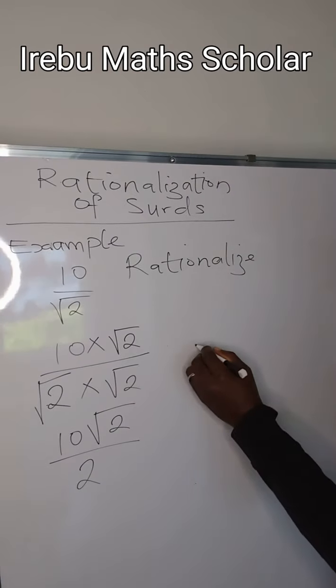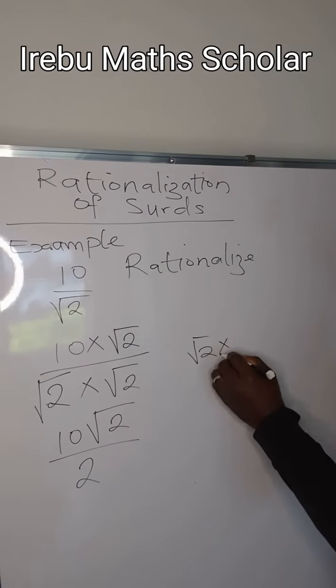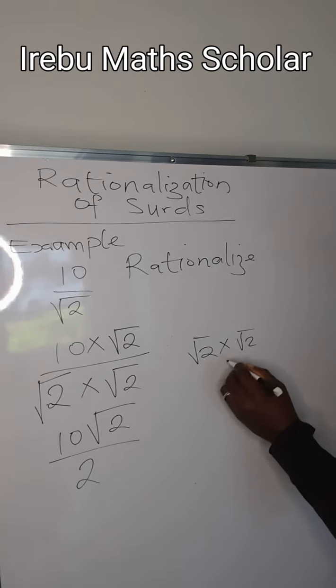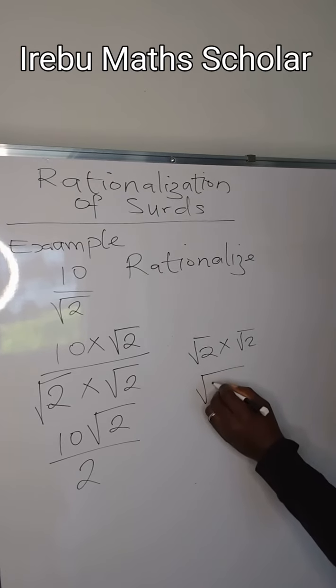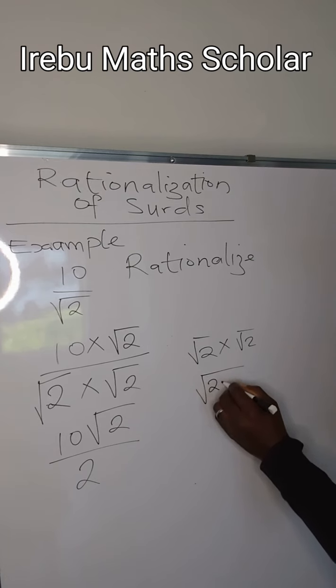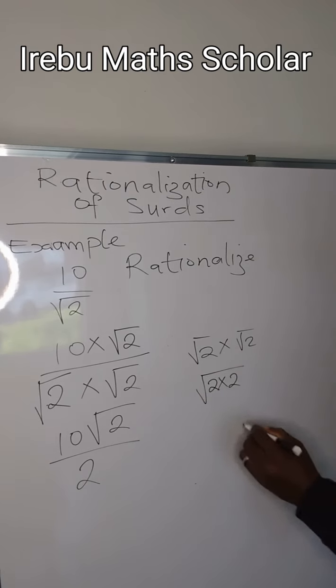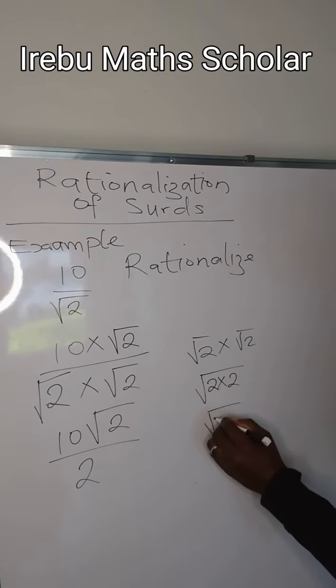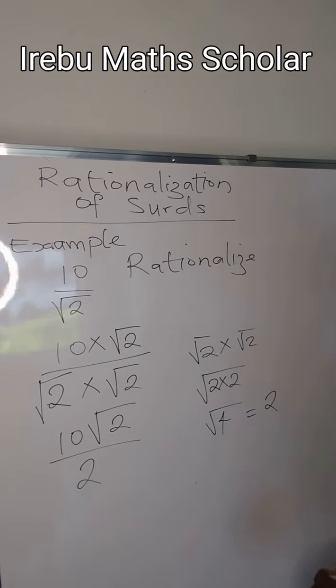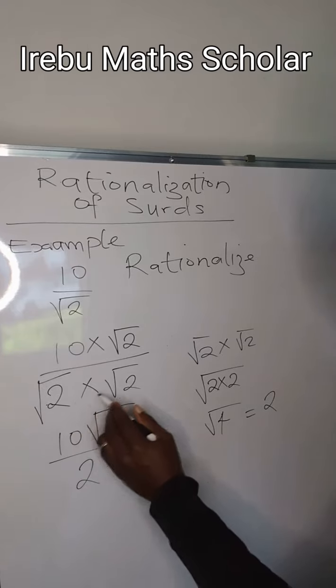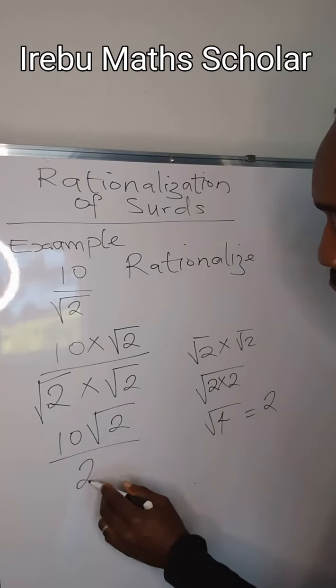In case you do not understand, if I say root 2 times root 2, what that means is if you open it up, we're going to have 2 times 2, and 2 times 2 is 4. The square root of 4 is 2. Therefore, we find out that root 2 times root 2 will give us 2.